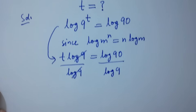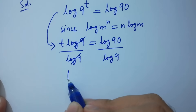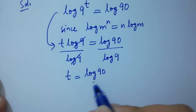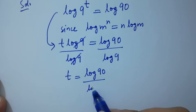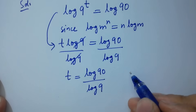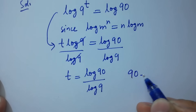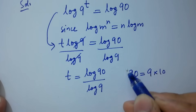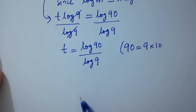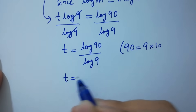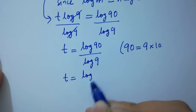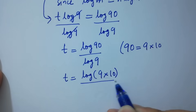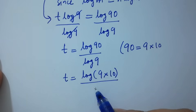Log 9 and log 9 cancel. t equals log 90 over log 9. Now, 90 equals 9 times 10, so t equals log(9 times 10) over log 9.